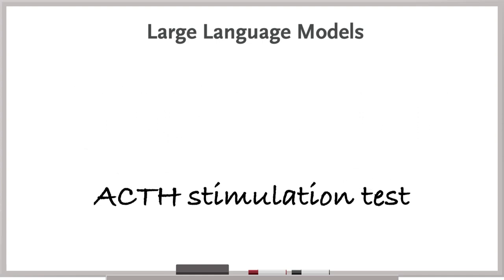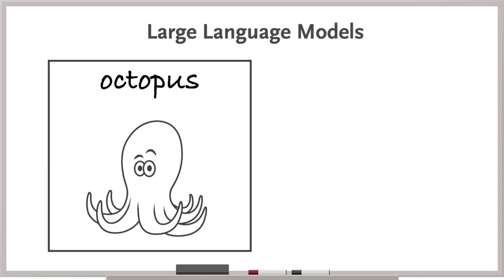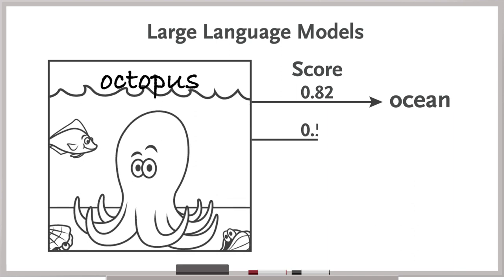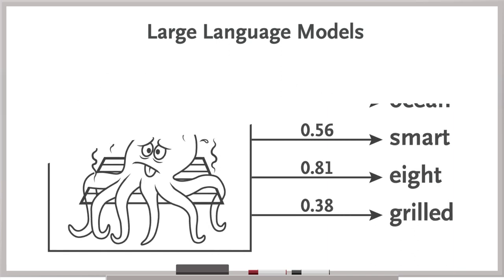Large language models are essentially a set of conditional probabilities of a given word occurring in a sentence given all the other words around it. The word octopus, for example, would get a score linking it to the other words with which it's typically associated, maybe ocean, smart, ate, or grilled. Of course, there's more to it than that.